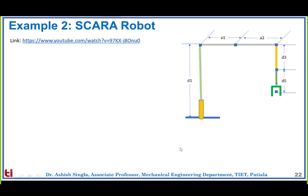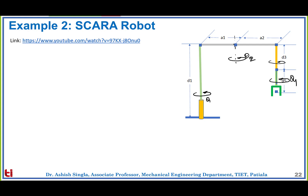Regarding the SCARA robot, we have this line diagram of the robot. We need to understand its degrees of freedom. The first degree of freedom is theta 1, the second joint is theta 2, then there is a vertical D3 prismatic joint, and finally theta 4 about which the final tool can roll. These are the four degrees of freedom of the SCARA robot.